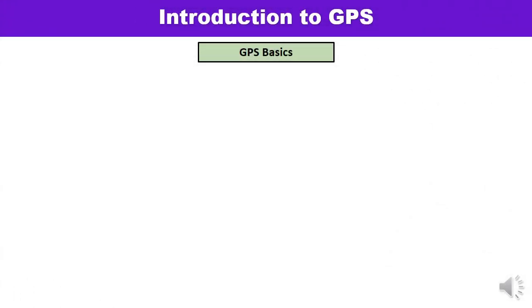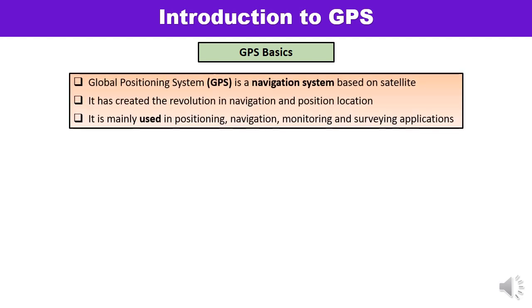First let us talk about some of the basics of the global positioning system. As you know, the global positioning system is a navigation system based on satellites, and GPS has created a revolution in the field of navigation and position location. Almost all of us are utilizing GPS in our daily life. GPS is used in a number of applications — mainly for positioning, navigation, monitoring, and surveying applications.